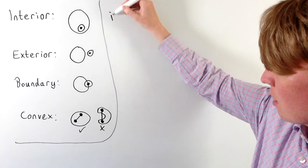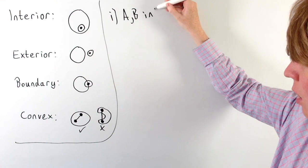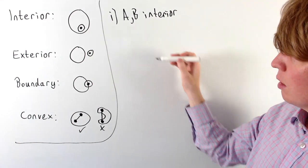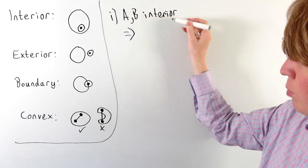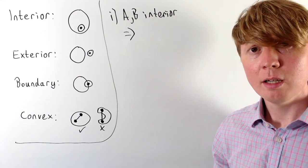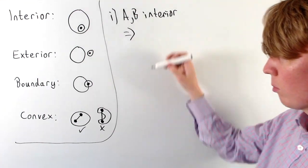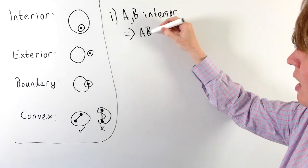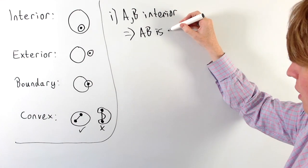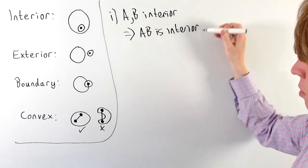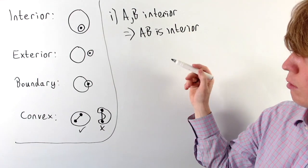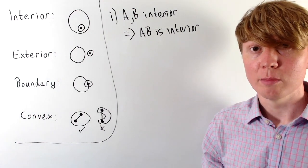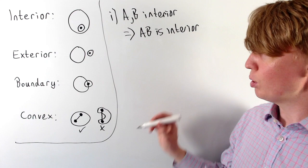Our first case: let's say A and B are interior points of a convex set. The claim is that if A and B are both interior points of a convex set, then every point on the line segment AB between them is also an interior point. So two interior points implies the line segment joining them is made up of entirely interior points.